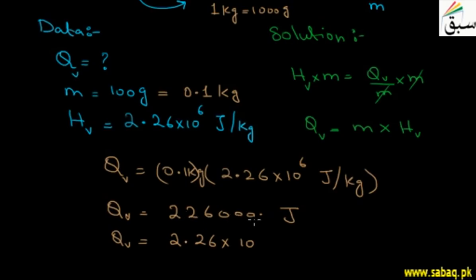So how many places have you moved the decimal? 1, 2, 3, 4, 5—five places moved. So the exponent is 5, and you can write it like this.